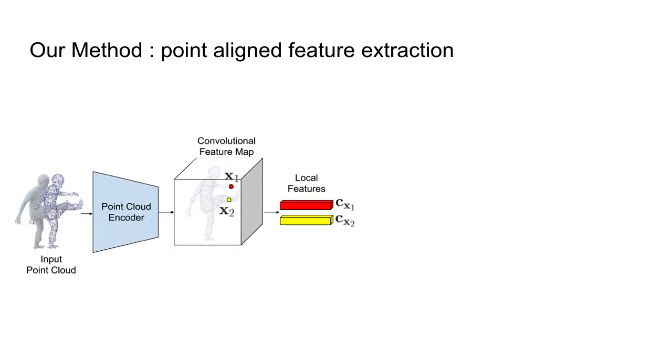Our approach aims at reconstructing surfaces from point clouds of dressed humans with occupancy networks. We first take the point cloud of a dressed human and extract a convolutional feature map of the point cloud. Then, given query points x1 and x2, we extract the corresponding local features from the feature map.